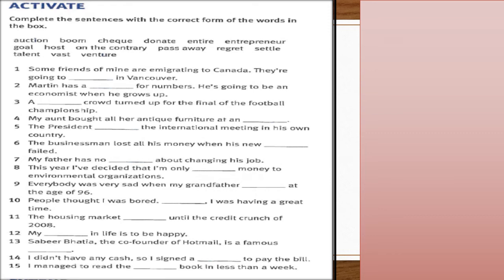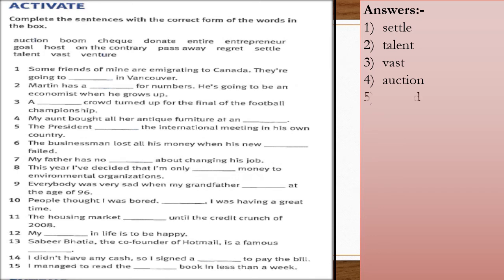Number 1: settle. Number 2: talent. Number 3: vast. Number 4: auction. Number 5: hosted. Number 6: venture. Number 7: regrets.